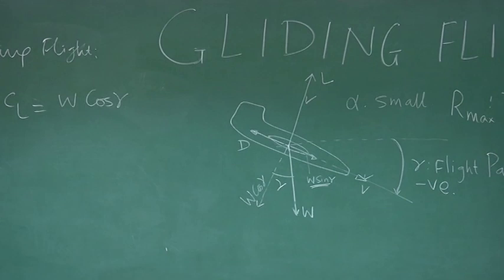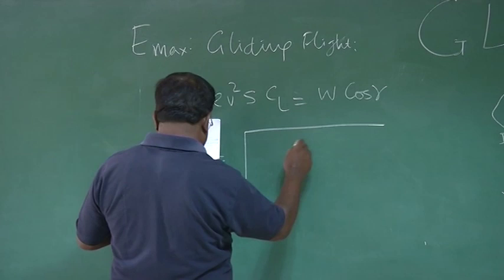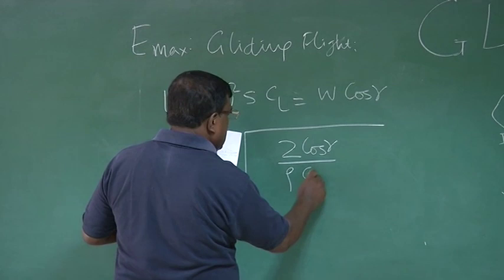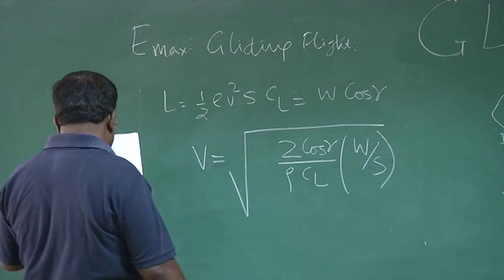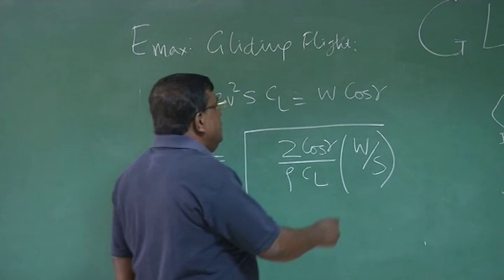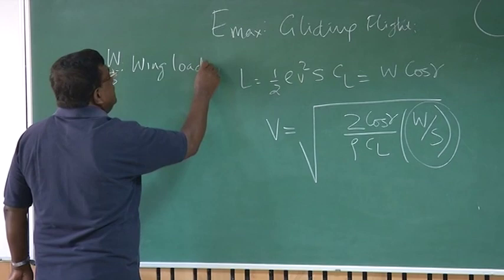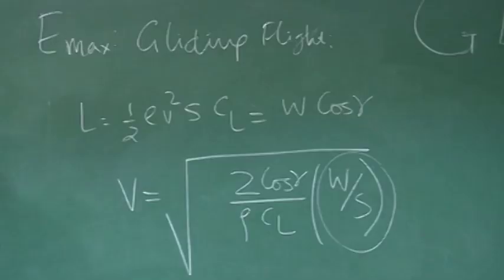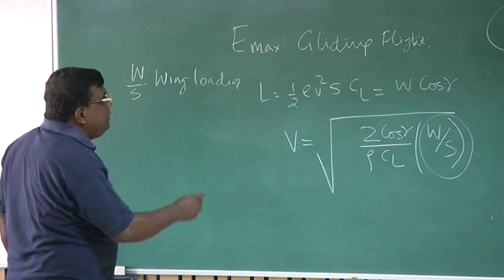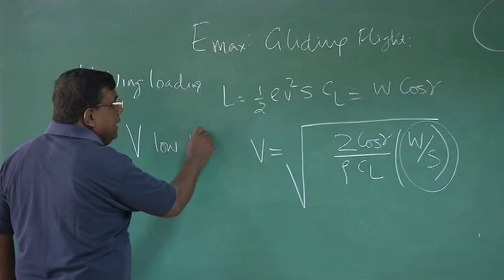How do I model it, how do I try to understand? You know, lift equal to half rho V square S CL, that is equal to W cos gamma, we have seen from here, lift equal to W cos gamma, this angle is also gamma. And that clearly, it gives me an expression, V equal to square root of 2 cos gamma by rho CL into W by S. What is W by S?